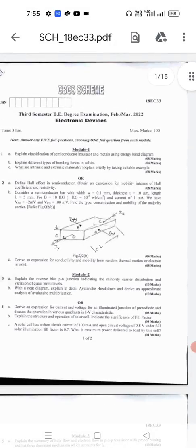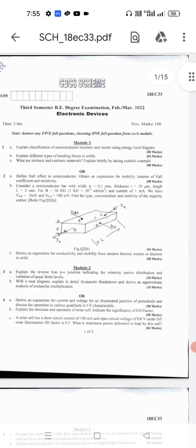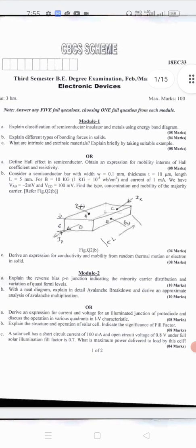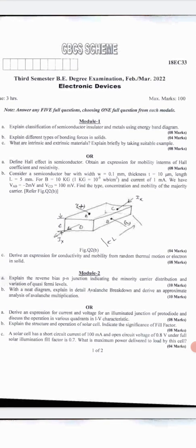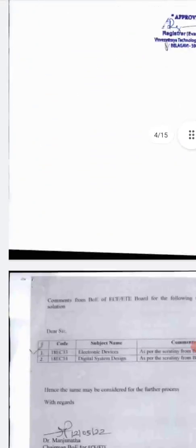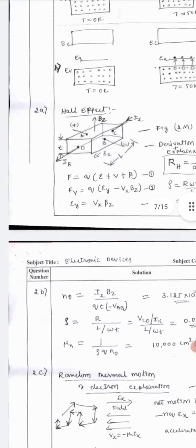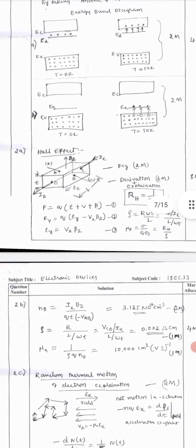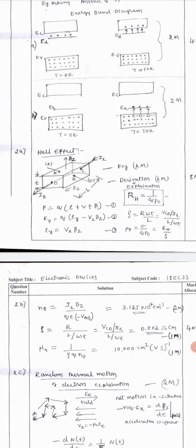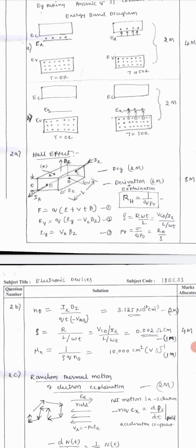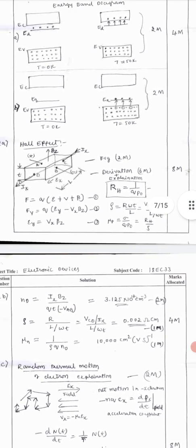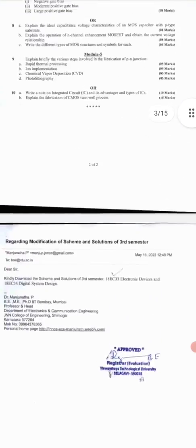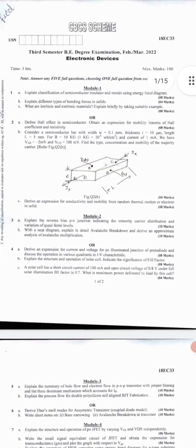Similarly, you can go for the next question - define Hall effect in semiconductor. Obtain the expression of mobility in terms of Hall coefficient and resistivity. For the second question, 2A, you should write the answer which is exactly like this. Hall effect, which is explained by this force equation. The diagram figure carries two marks. Derivation carries six marks, so totally it is eight marks. Clearly they will mention everything in the scheme.